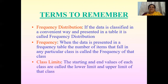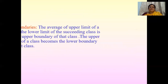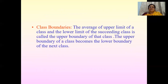Class limits: the starting and end values of each class are called the lower limit and upper limit of the class. Class boundaries: the average of the upper limit of a class and the lower limit of the succeeding class is called the upper boundary of the class.